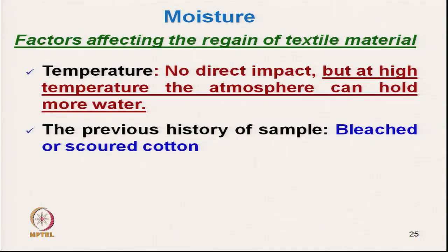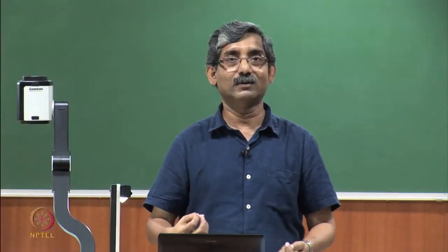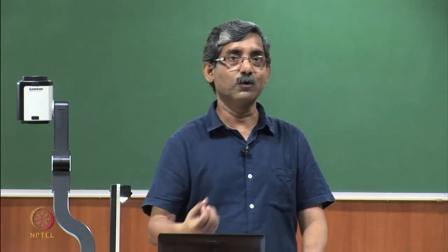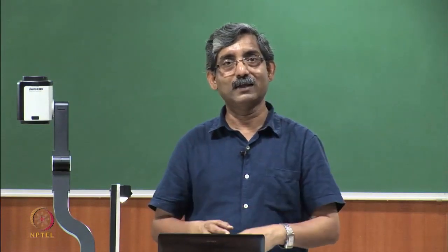Another effect is temperature. Although there is no direct impact of temperature, at least for lower temperatures, at higher temperature the textile material will get affected and there will be damage. As far as moisture is concerned, if we increase the temperature to some extent the moisture content will increase, because at high temperature the atmosphere can hold more and more moisture, allowing the textile material to absorb higher moisture content from the atmosphere.